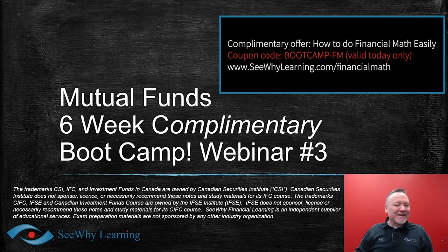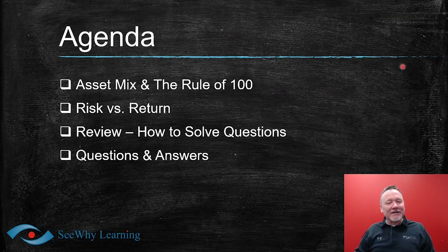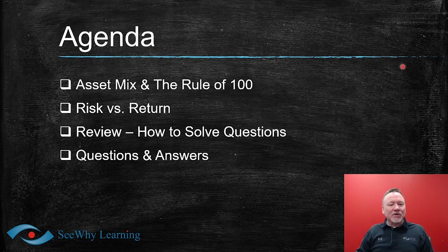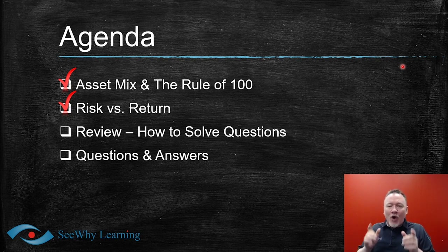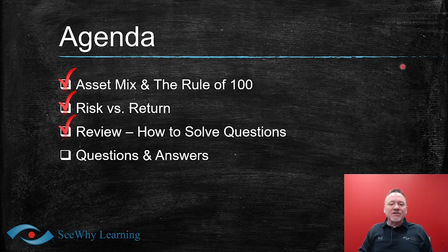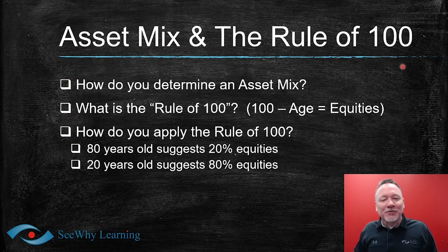Let's have a look at today's agenda. We've got four things on our plate. Today's agenda might seem a little short — it'll probably take us a good 25 or 30 minutes. We're going to start with asset mix and the rule of 100, then talk about risk versus return, then review how to solve questions — which we covered last week, so it may be a refresher — and finally take up some exam-level questions along with our instructor's approach to answering them.